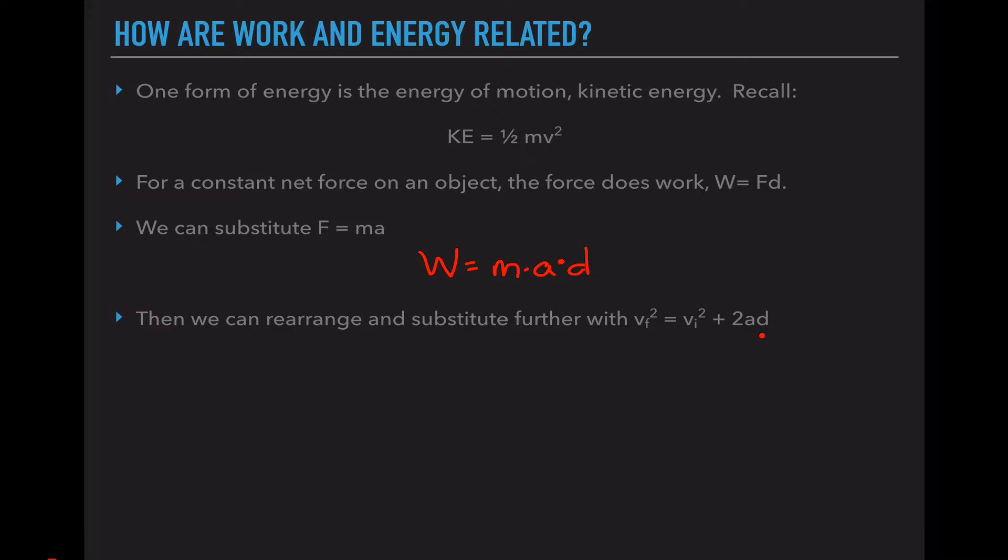Now we're going to take this kinematic equation from a couple units ago and rearrange it to solve for acceleration. So vf² minus vi² equals 2ad. We subtract vi², then divide by 2d. So now we have a equals vf² minus vi² over 2 times distance. We just did that rearranging so we can now substitute this value in for the a in this equation.